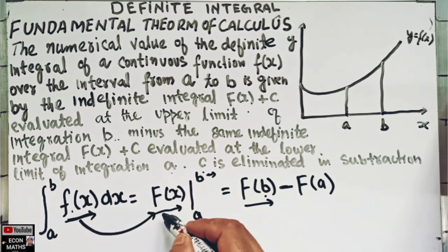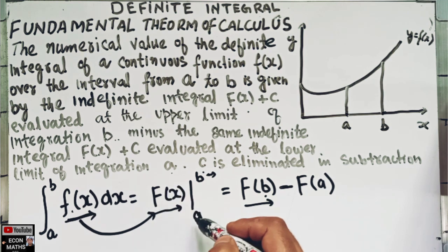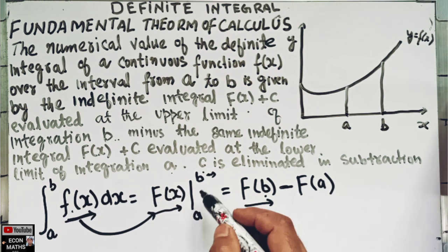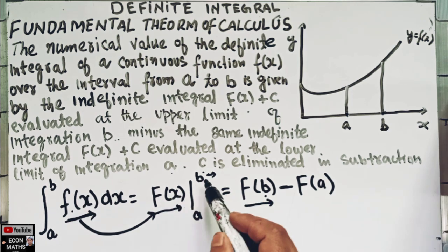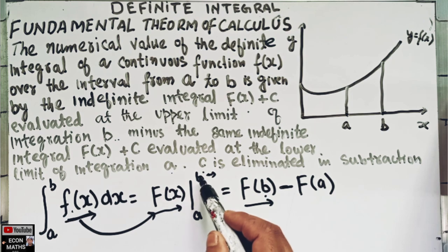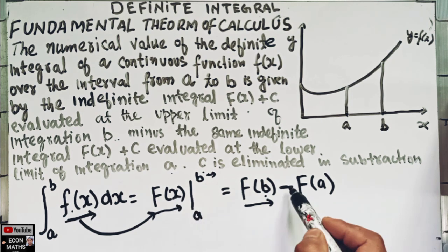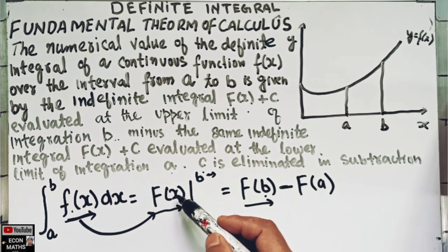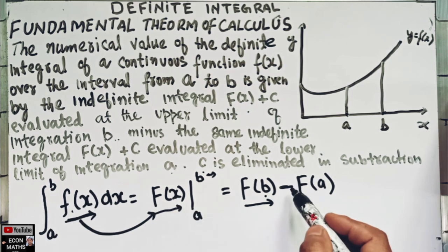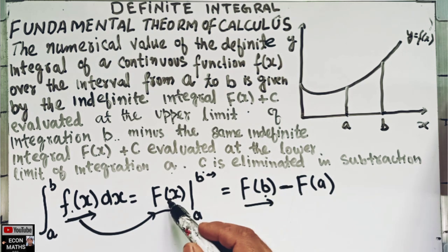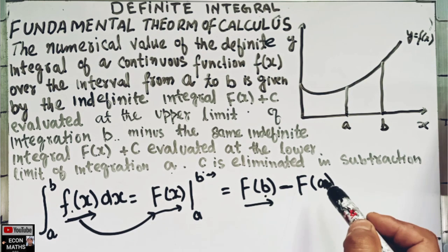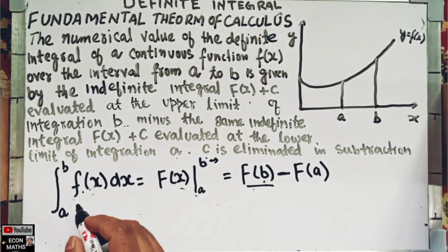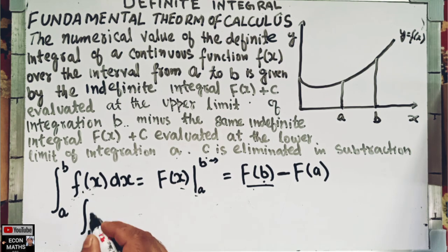If we integrate f(x) and get F(x), then F(x) is evaluated at the upper and lower limits. We substitute the value b for x to get F(b), and then subtract F(a), obtained by substituting a for x. The result is F(b) − F(a).